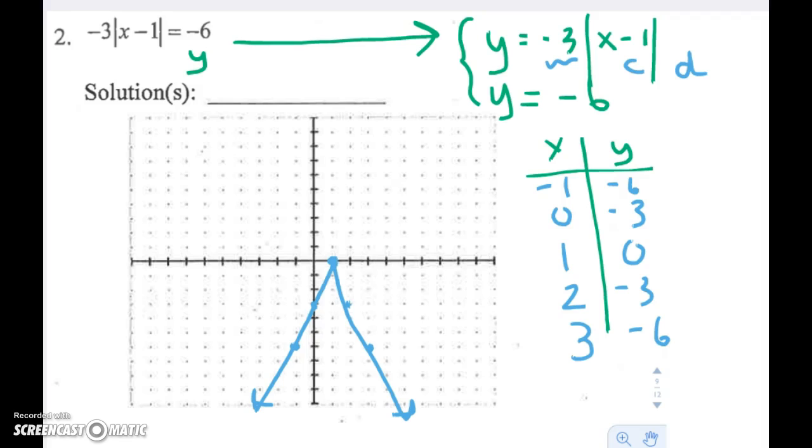So now I'm going to move on and look at my second function, which is y equals negative 6. The slope is 0. It's a horizontal straight line where y equals negative 6. Just like that.